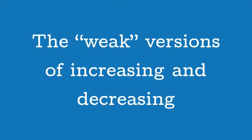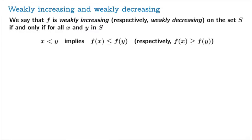There are weak versions of what we just described. We say that f is weakly increasing, respectively weakly decreasing, on the set s, if and only if for all x and y in s, x less than y implies f of x less than or equal to f of y — and of course the respective definition for decreasing. The only difference from the strict definition is that we've now allowed for equality. These are no longer strict inequalities; they allow for equality.